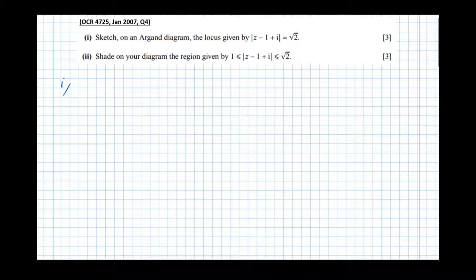We've done a video on proving that this is actually the general form of a circle when talking about loci on the Argand diagram, but what it does help is to write it like z take away a complex number. So z take away 1 minus i, modulus equals √2.